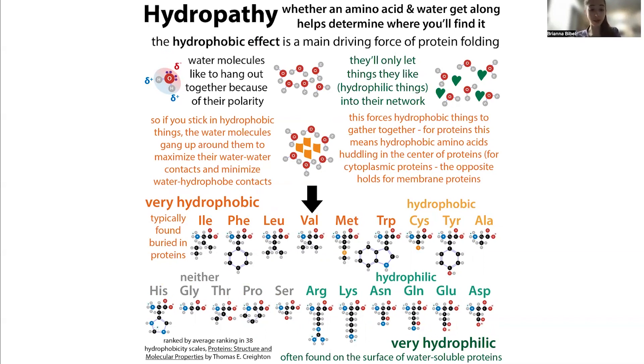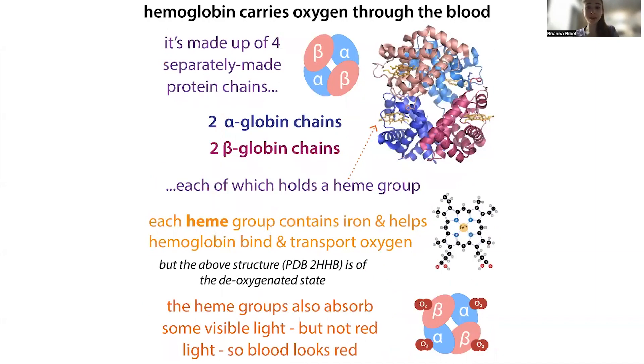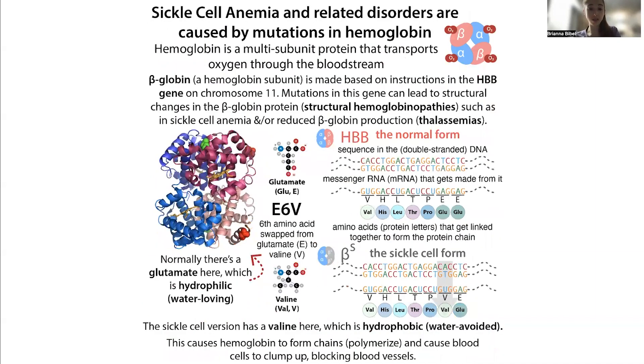So you typically find valine in the center of a protein. What happens if you find it on the surface? This can lead to disorders like sickle cell anemia.